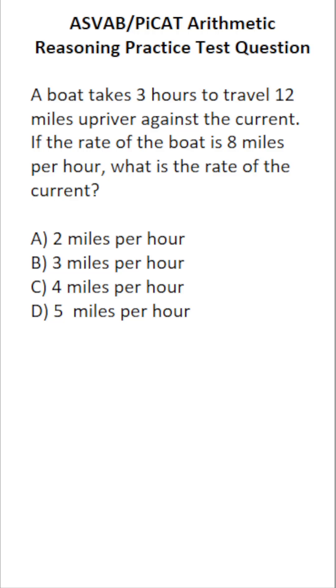This arithmetic reasoning practice test question for the ASVAB and PiCAT says, a boat takes three hours to travel 12 miles upriver against the current. If the rate of the boat is eight miles per hour, what is the rate of the current?